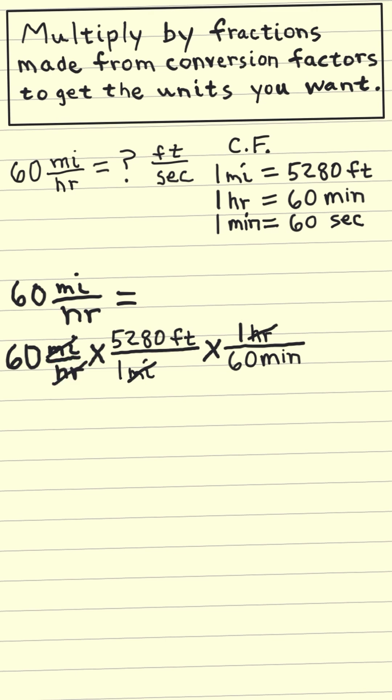What we really want is seconds. So to get rid of the minutes on the bottom, we'll use this conversion factor and bring minutes to the top and seconds to the bottom. The minutes cancel out and we're finally left with seconds.